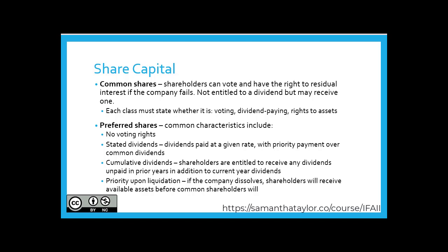For common shares, shareholders can vote and have the residual right to interest if the company fails. They are not entitled to a dividend but may receive one. Each class must state whether it is voting, dividend paying, or if it receives rights to assets. All classes of common shares in combination must cover these three: voting, dividend paying, and right to assets.